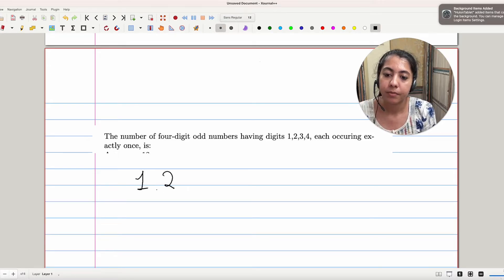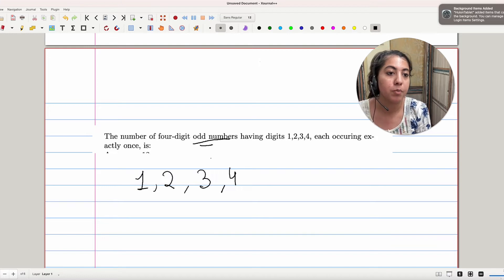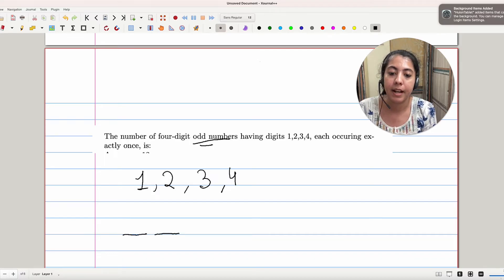We have these numbers, and the number formed should be an odd number. How can we do that? An odd number is a number that ends with a ones digit of either 1, 3, 5, 7, or 9.